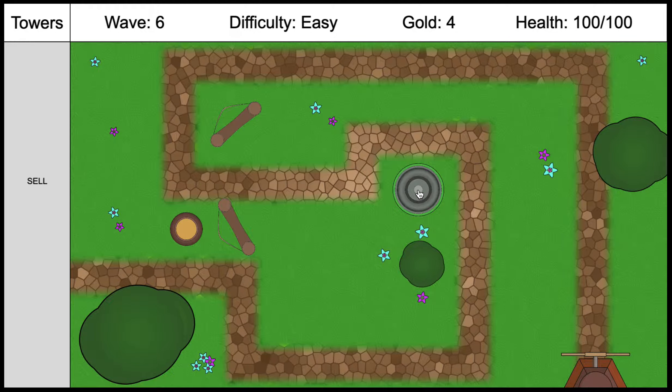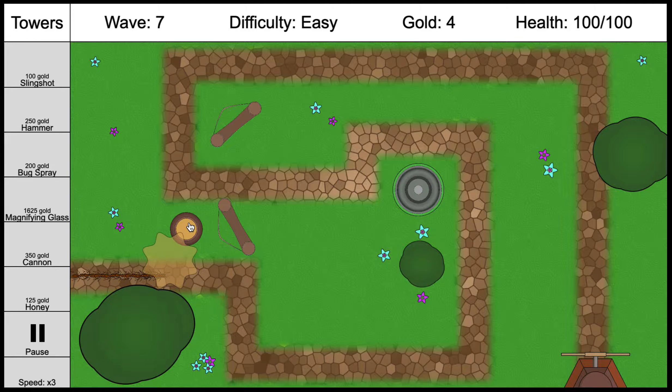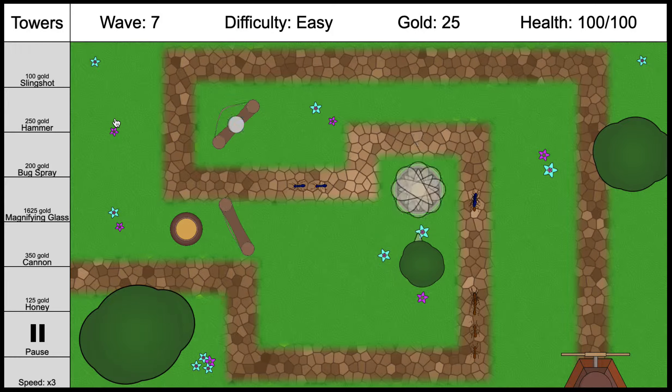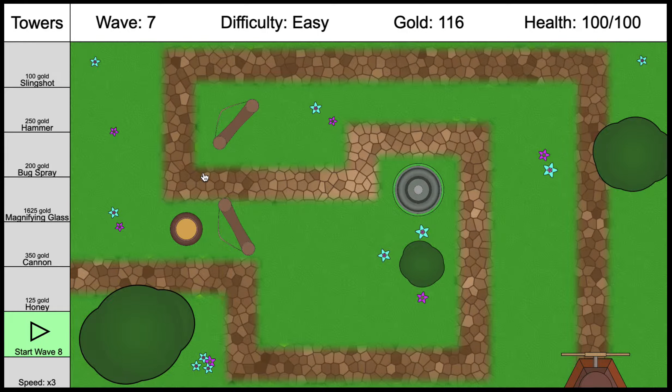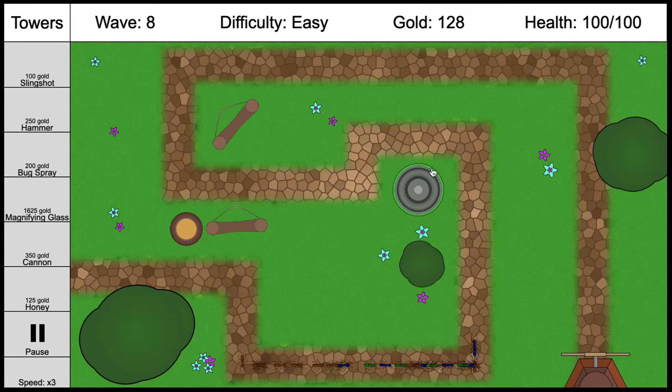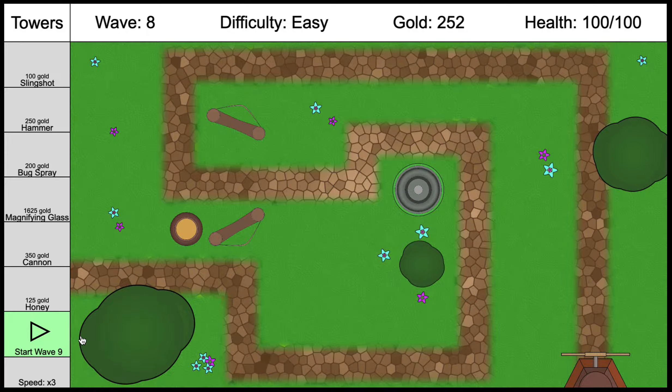Just enough for a bug spray. Let's pop that guy in there. The honey, slingshot, cannon, magnifying glass, and hammer all target the ants, and they target their future position. They take into consideration how quick the projectile travels, and it leads the target and will always hit it. The bug spray doesn't do that, however. It just waits until something's in proximity and then shoots out eight projectiles. If the projectile hits the ant, then it will damage it. Let's watch the bug spray here. As soon as they come within range, it'll start shooting out. When the projectile hits an ant, it disappears. It's quite handy for little turns like that in the path.